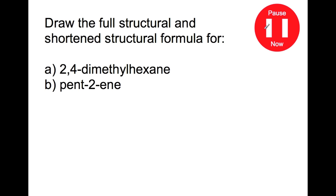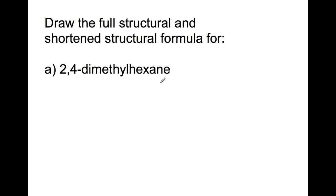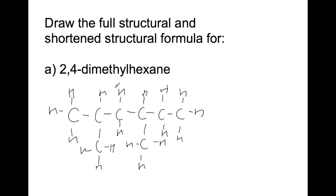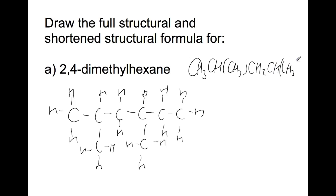Pause the video and draw the full and shortened structural formula for each of these molecules. For 2,4-dimethylhexane, start with the hexane part — six carbons in a row. On carbons two and four we have methyl groups. The shortened structural formula is: CH3, then CH with a CH3 branch, then CH2, then CH with a CH3 branch, then CH2, then CH3.